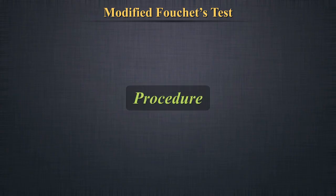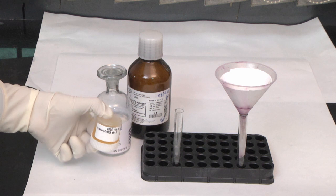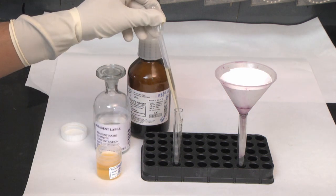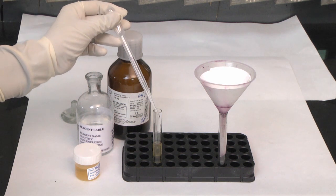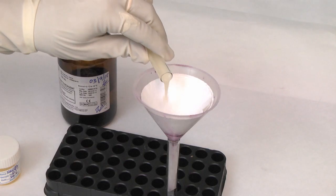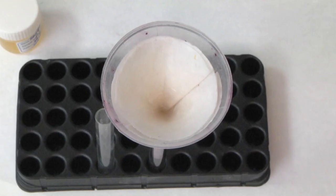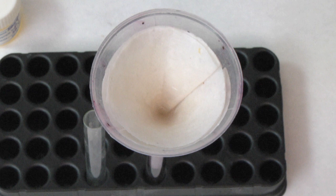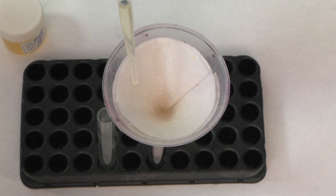Procedure: All standard precautions need to be exercised. Mix the urine sample well. Take 2ml of urine in a test tube and add an equal amount of 10% barium chloride, then mix well. Shake and filter using the filter paper. The precipitate gets collected on the filter paper. Add 2 drops of Foscis Reagent onto the precipitate on the filter paper.